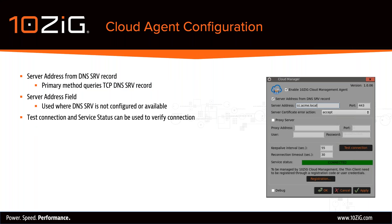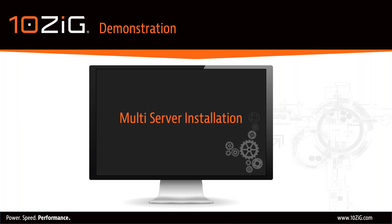Here's a quick look at the Cloud Agent configuration. The 'Enable Tenzing Cloud Management Agent' option is on by default, as is the 'Server Address from DNS SRV Record'. Where the DNS SRV record is created, the connection occurs seamlessly. Where the DNS SRV record is not present, you fill out the server address field manually to enable the Cloud Agent to connect to the Cloud Connector. There are some other options we'll cover during the demonstration.